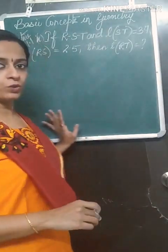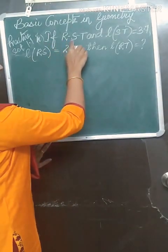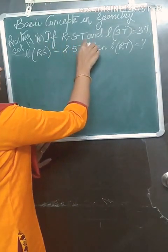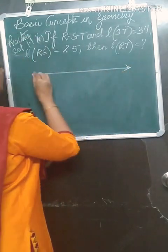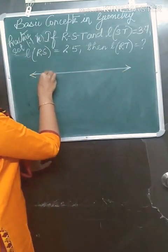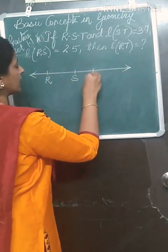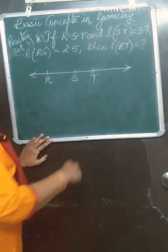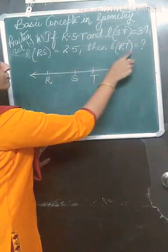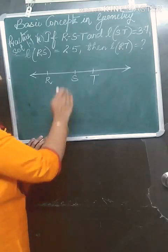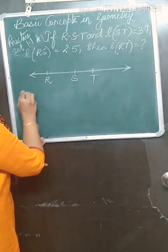Now sum number 2, similarly we will solve. If R-S-T, first draw the figure: R-S-T. ST is given, length of RS is given, find RT.